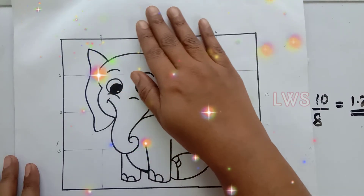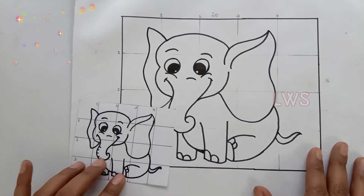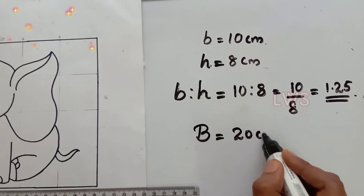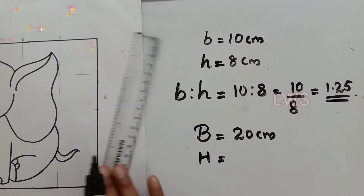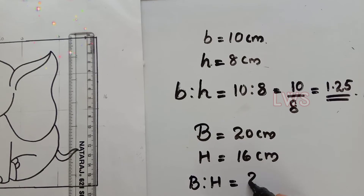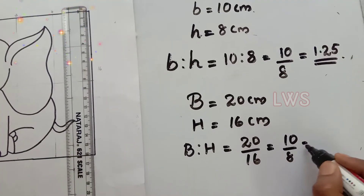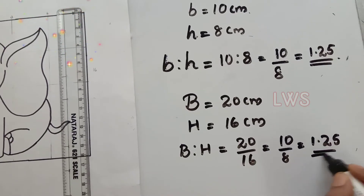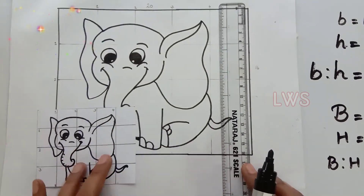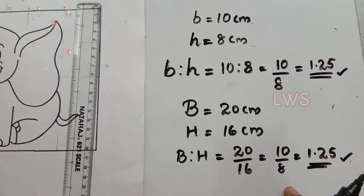Look, a cute elephant in double size is ready! Coming back to the mathematics part, here also we calculate the base to height ratio: 20 divided by 16, which is equal to 1.25. So even if we enlarged the picture, the ratio between the base and the height is the same. That's why we got the picture in the correct shape.